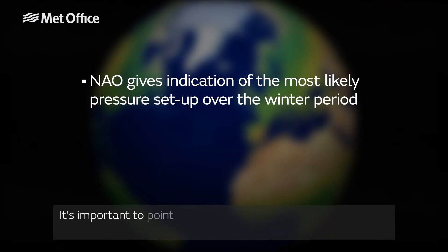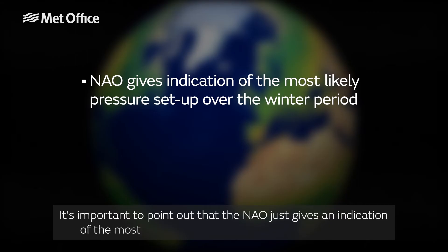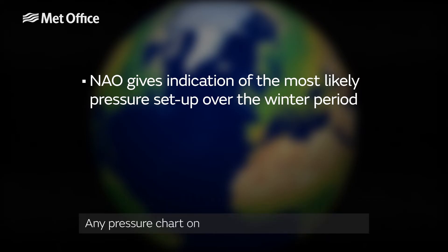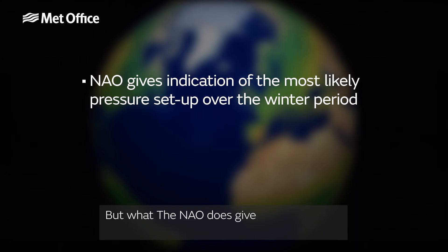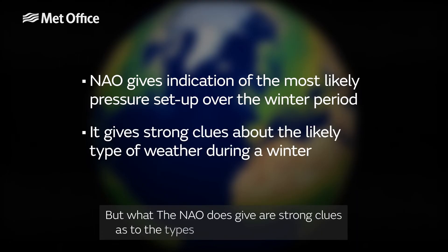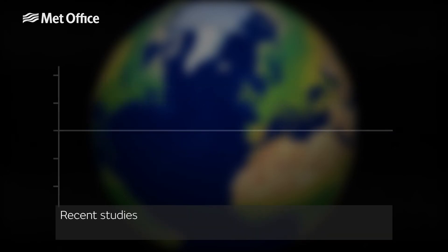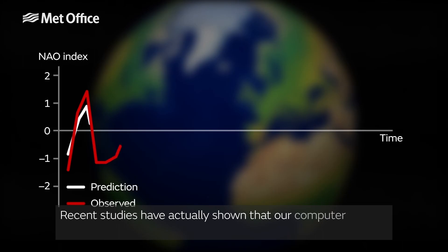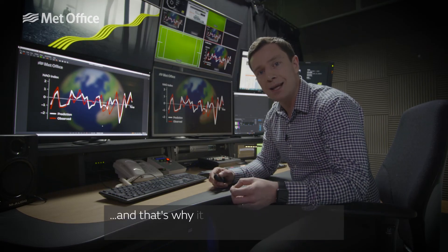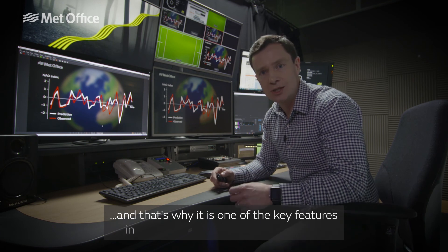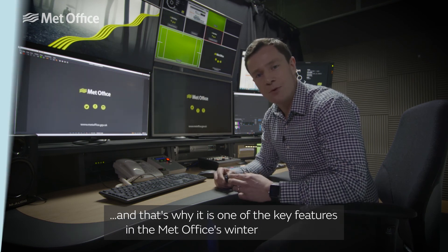It's important to point out that the NAO just gives an indication of the most likely pressure setup over a period of time. Any pressure chart on a given day would be different, but what the NAO does give are strong clues as to the types of winter that we can get. Recent studies have actually shown that our computer models are very good at predicting the NAO, and that's why it is one of the key features in the Met Office's winter forecast.